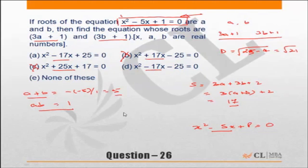Similarly, what about the product of roots? 3a plus 1 into 3b plus 1. This will be equal to 9ab, which is 3a into 3b, plus 3a into 1 plus 1 into 3b.